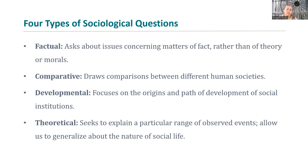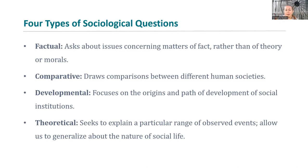There are four types of sociological questions. Factual, which asks about issues concerning matters of fact rather than theory or morals. Comparative, which draws comparisons between two different kinds of societies or even two different groups within society. Developmental, which focuses on the origins or path of development of a particular institution or idea — how did we get to this place? And theoretical, which seeks to explain a particular range of observed events and allows us to generalize about the nature of social interactions and social life.